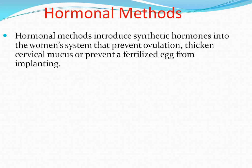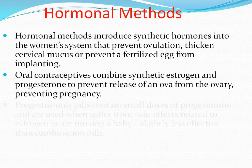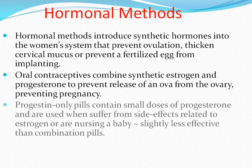Hormonal methods introduce synthetic hormones into the women's system that prevent ovulation, thicken cervical mucus, or prevent a fertilized egg from implanting. Oral contraceptives combine synthetic estrogen and progesterone to prevent release of an ovum from the ovary, thereby preventing pregnancy.